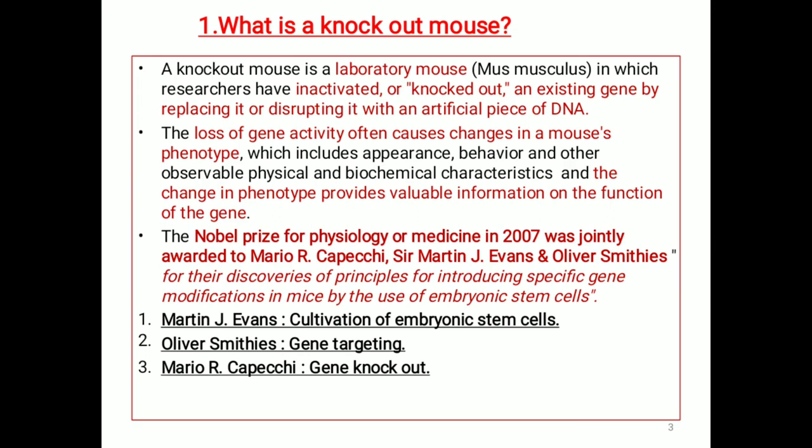The Nobel Prize for Physiology or Medicine in 2007 was jointly awarded to Mario R. Capecchi, Sir Martin J. Evans, and Oliver Smithies for their discoveries of principles for introducing specific gene modifications in mice by the use of embryonic stem cells. Martin J. Evans had done cultivation of embryonic stem cells, Oliver Smithies had done gene targeting, and Mario R. Capecchi had done gene knockout.